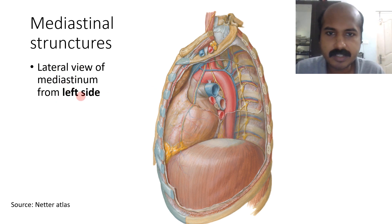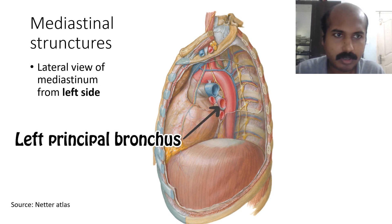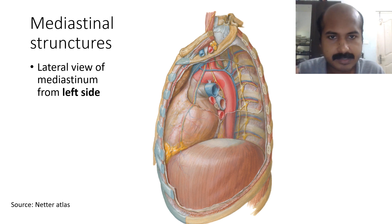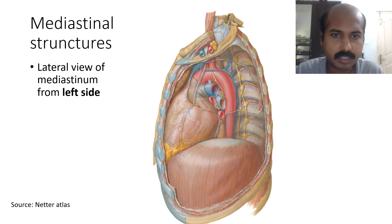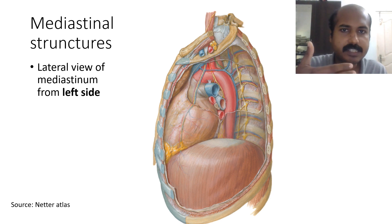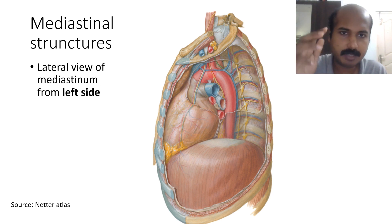In the lateral view of the mediastinum from the left side, you can see the root of the lung — including the left principal bronchus, pulmonary veins, and pulmonary artery. The vagus runs behind the root of the lung. Another important nerve descending in this view is the phrenic nerve, which supplies the diaphragm and runs in front of the root of the lung. Both the phrenic and vagus nerves are displaced from the trachea and esophagus by the arch of the aorta. Thank you.